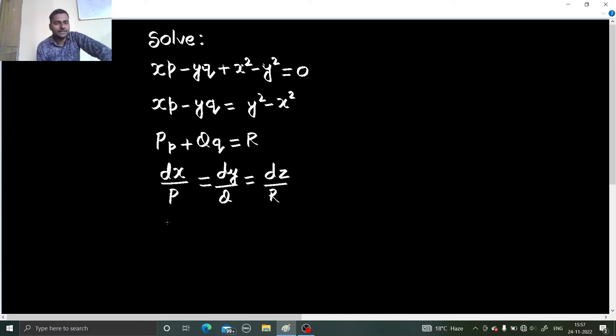What is our P in this question? That is small x, so dx by x, dy by whatever is with q, write that. So minus y, dz divided by y square minus x square.